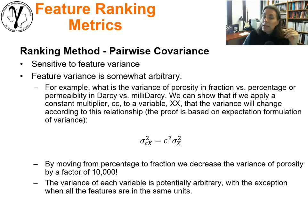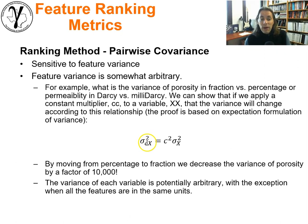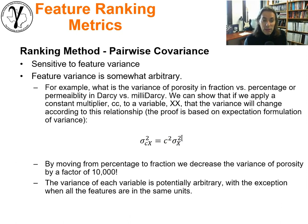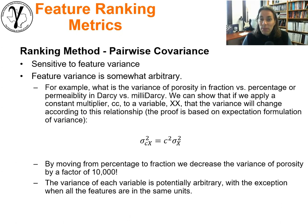The problem with covariance is that it's sensitive to actual variance, which is somewhat arbitrary based on the units we choose. For example, representing permeability as Darcy or Millidarcy — multiplying by 1,000 — means the variance of that scaled random variable equals the square of that constant times the original variance, so the variance increases by 1,000,000. Going from percentage to fraction for porosity, a division by 100, changes the variance by 10,000. So the actual magnitude of variance — and therefore covariance — can be arbitrary based on units.